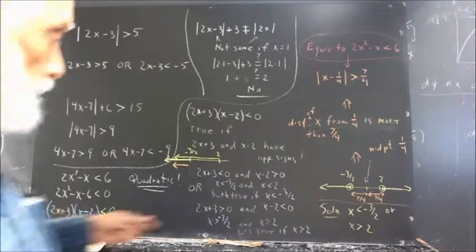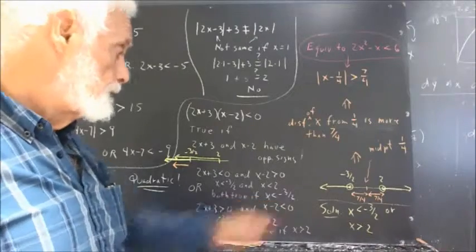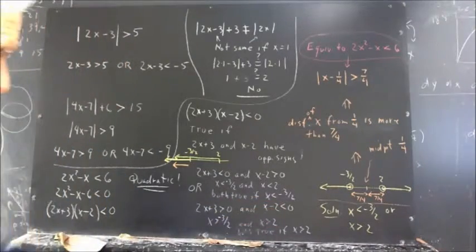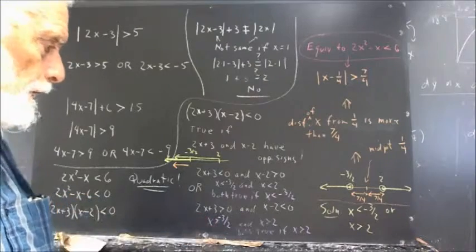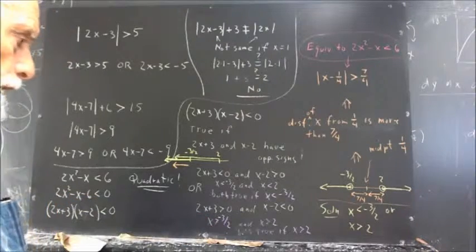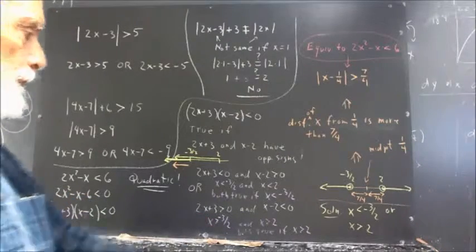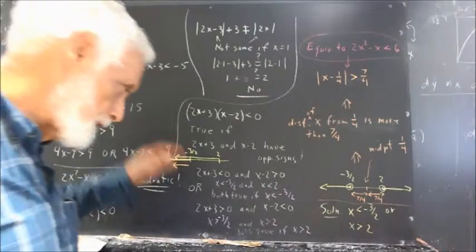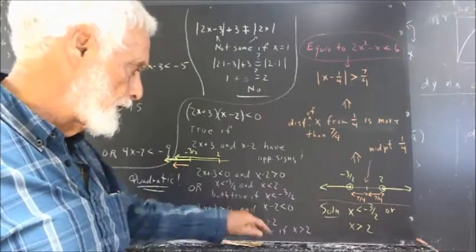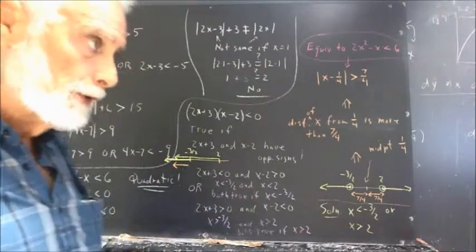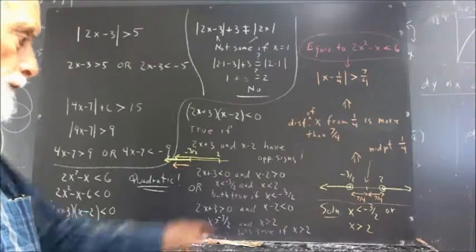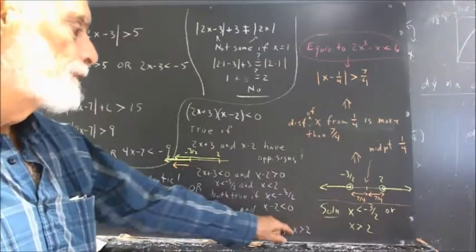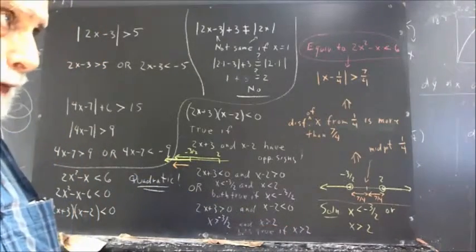Doing the same analysis for Case 2, we find x must be greater than negative 3 halves and x must be greater than 2. Both are true only if x is greater than 2.